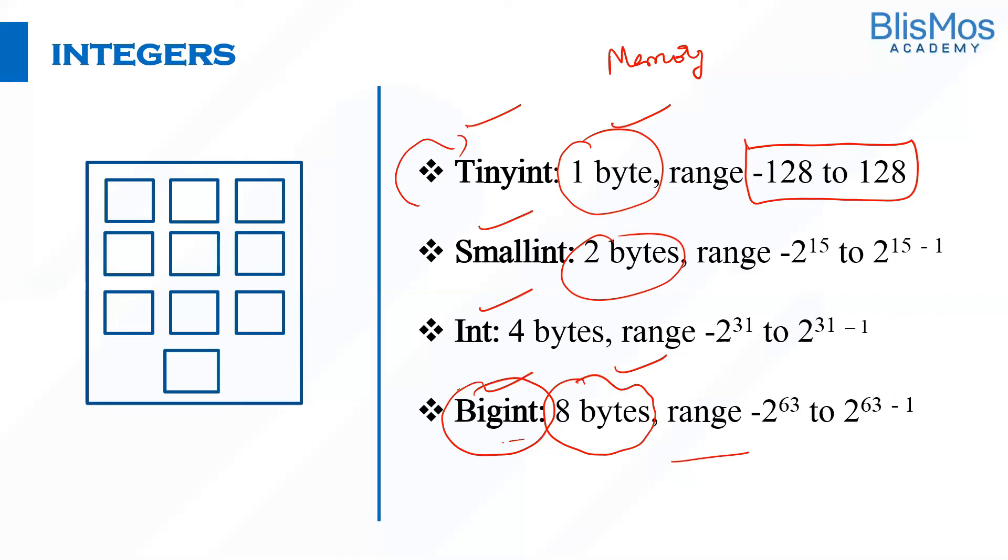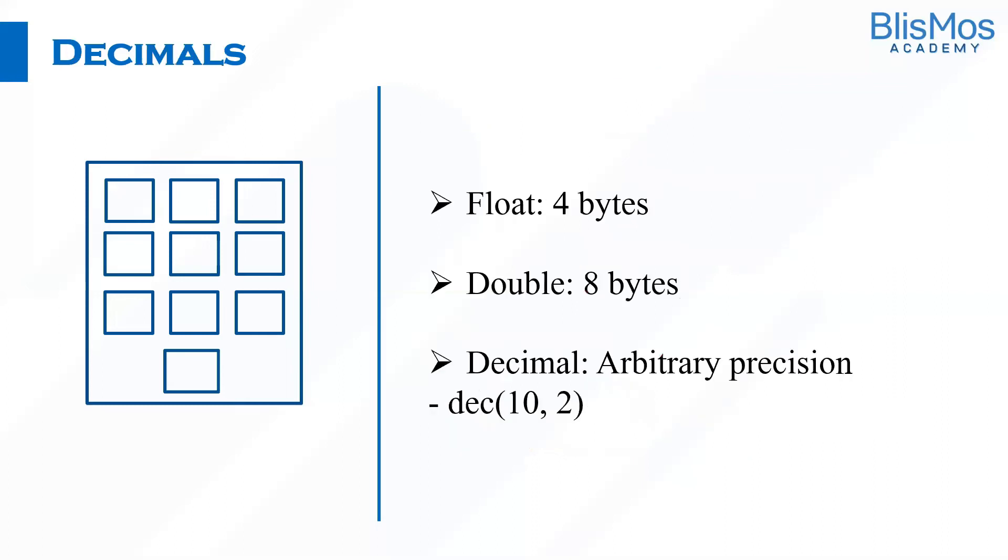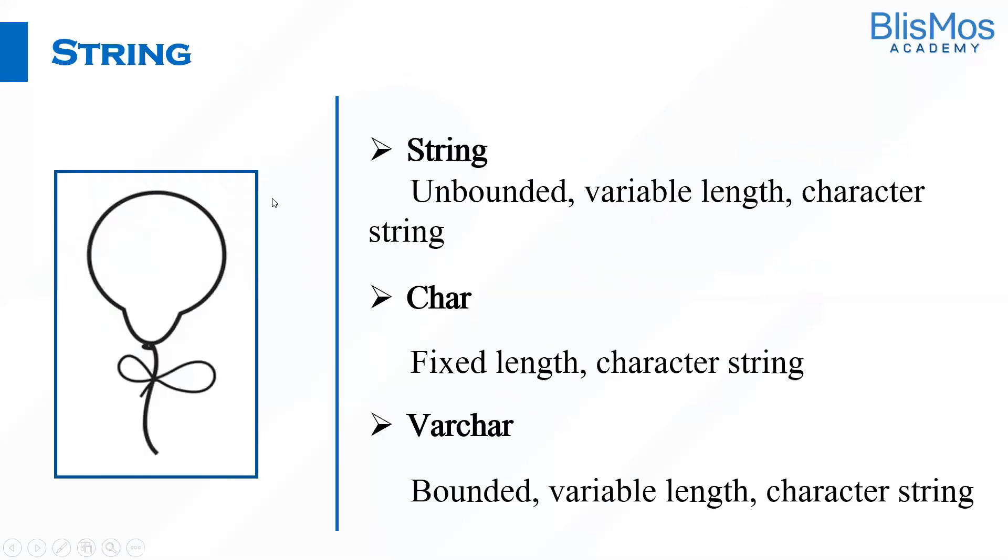In decimals we have float, double, and decimal. Float takes four bytes, double takes eight bytes. In the similar fashion the way we discussed integer types, depending upon our requirement we need to define whether our decimal data type should be float or double. We also have decimal with a precision of 10,2.